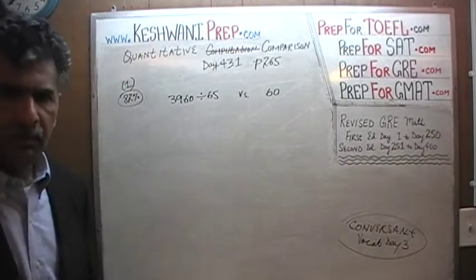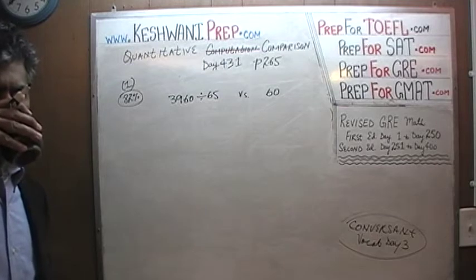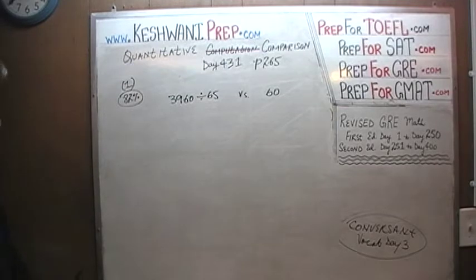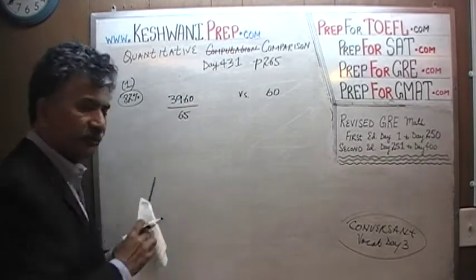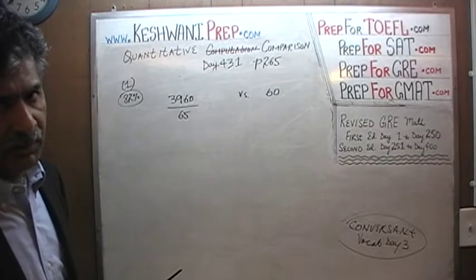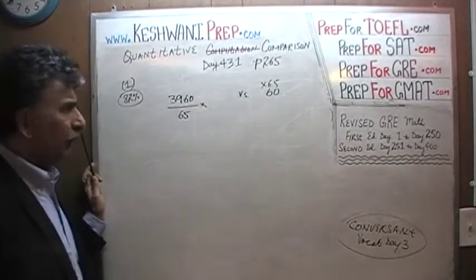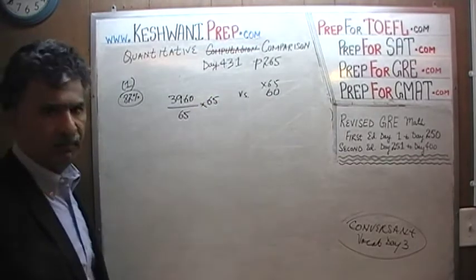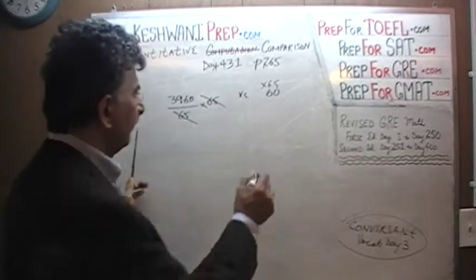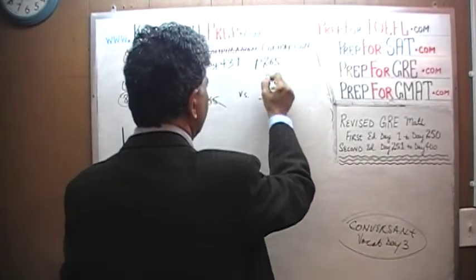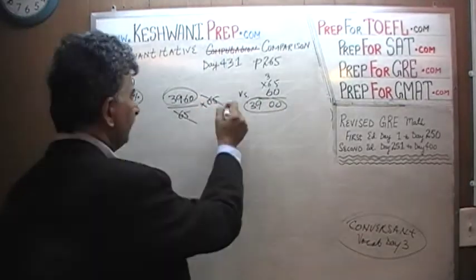We are told to divide 3960 by 65. To try to divide this number by 65 will take some time — it will be very annoying, very cumbersome. So don't do that. Let's multiply both columns by 65. The 65 drops out, and now it's much easier to multiply than to divide. 65 times 60: 6 times 5 is 30, so 65 times 60 is 3900. So we have 3900 versus 3960. 3960 is bigger. The answer is A.